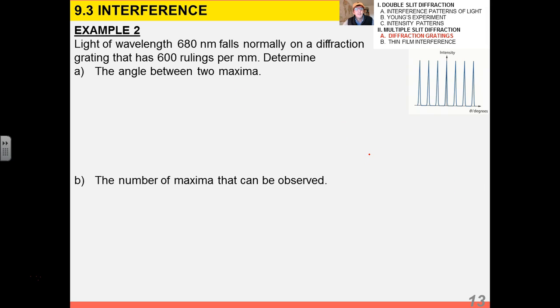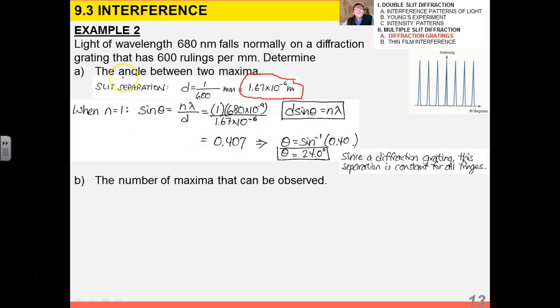When we talk about diffraction gratings, we're going to concern ourselves not so much with destructive interference initially, but just with constructive interference. So try this one on your own. We have a light of wavelength 680 nanometers falling normally on a diffraction grating that has 600 rulings per millimeter. I want you to determine the angle between two maxima and the number of maxima that can be observed. The angle between the two maxima - I have to figure out the slit separation. When n equals 1, I have that d sine theta equals n lambda. I solve for theta, and I get that theta is 24 degrees.